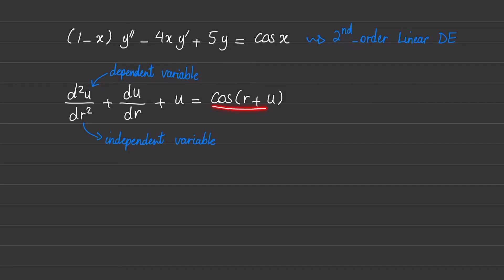But on the right hand side, cosine of (r + u) is a function of both the independent and dependent variable, so we call this a nonlinear term. All the terms on the left hand side are linear while the right hand side is nonlinear, so we call this a second order nonlinear differential equation.